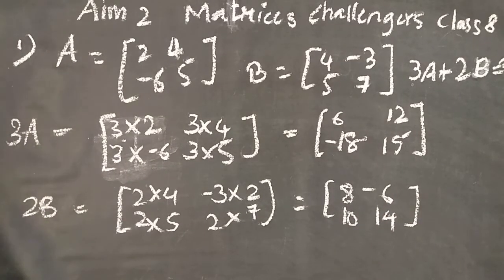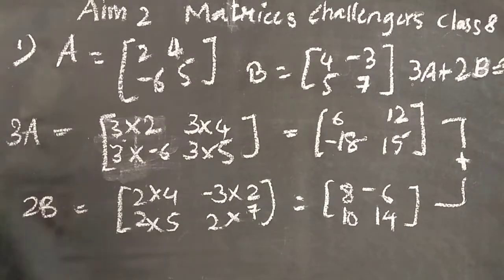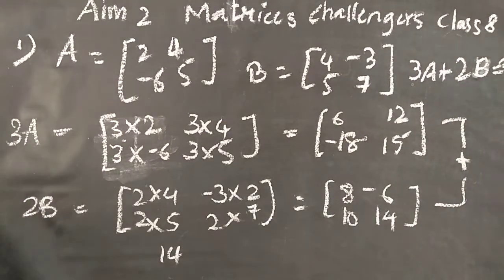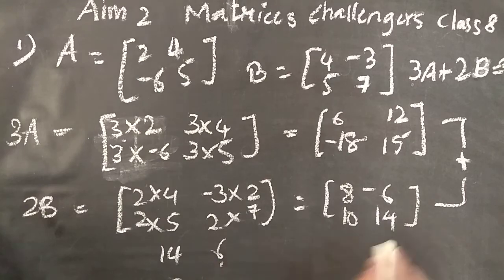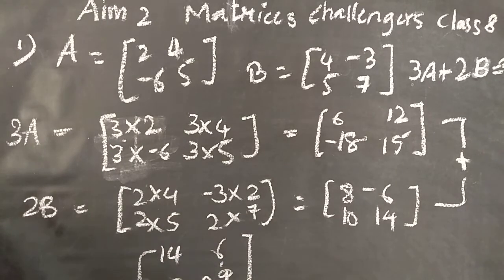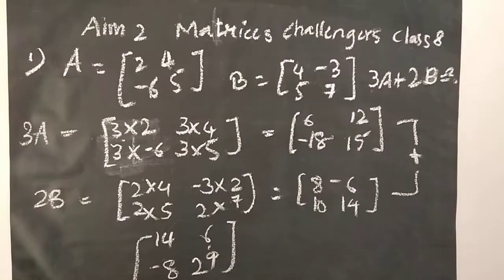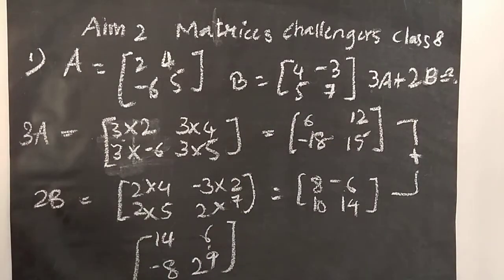Now we have both matrices 3A and 2B, so we add them. We learned addition in the previous session. 8 plus 6 is 14; minus 6 plus 12 is 6; 10 plus minus 18 is minus 8; and 14 plus 15 is 29. So the answer is the matrix 14, 6, minus 8, 29.